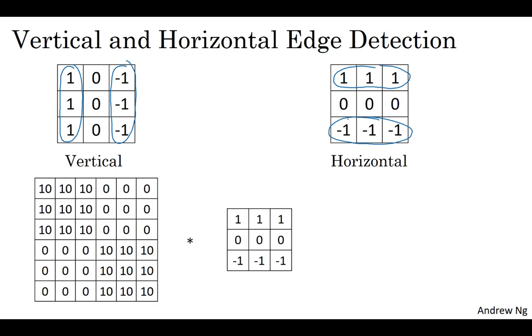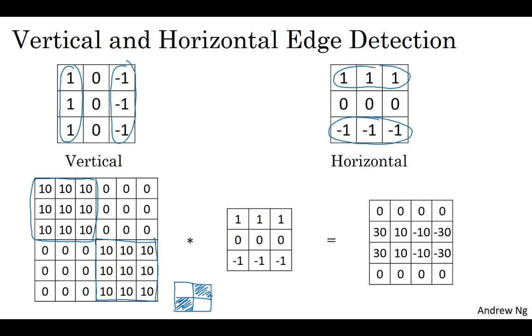Here's one example. This is a more complex one where you have tens in the upper left and lower right hand corner. If you draw this as an image, this would be darker where there's zeros, so I'm going to shade in the darker regions and then lighter in the upper left and lower right hand corners. If you convolve this with a horizontal edge detector, you end up with this.